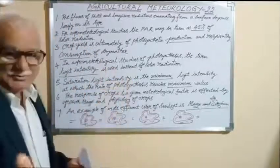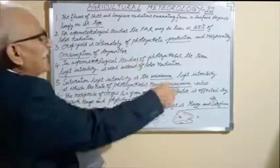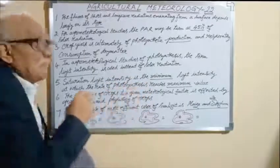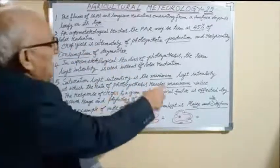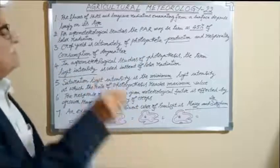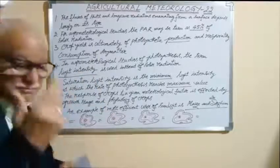Saturation light intensity is the minimum light intensity at which the rate of photosynthetic process reaches maximum value. Anything may come as a bit. So, saturation light intensity is the minimum light intensity where photosynthetic is its maximum value.